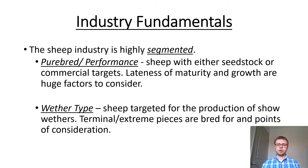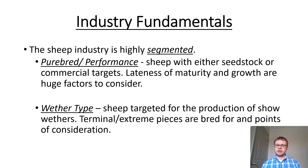On the purebred or performance side, sheep with seed stock or commercial targets are bred for lateness of maturity and growth as major factors. These are frame type sheep — bred for extra growth and extra performance. We'll see them having a lot of height of shoulder, length of body, and very tall stature. It takes them a bit longer to reach mature body type, but they're simply bigger sheep.